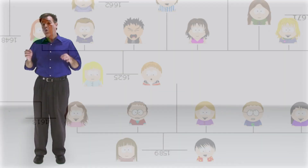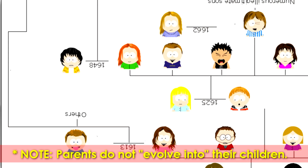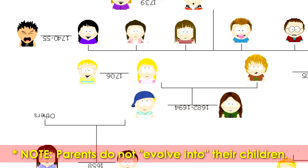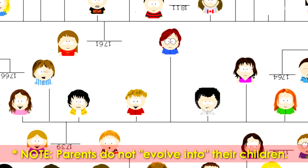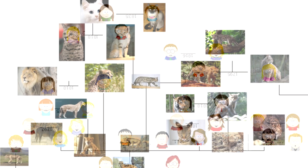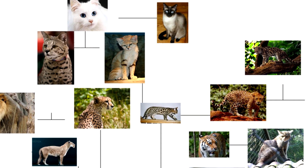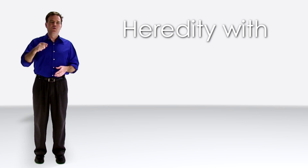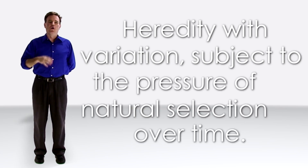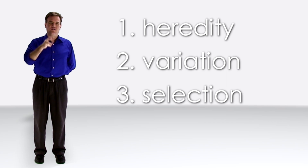It's important to note that individual organisms do not evolve. Instead, generations of organisms pass on traits with variations subject to selection, which over thousands of generations and vast quantities of time lead populations of organisms to change and evolve. Heredity with variation subject to selection over time — heredity, variation, selection, time.